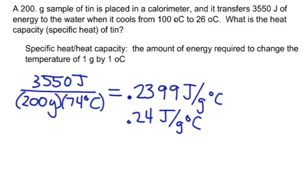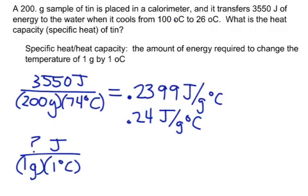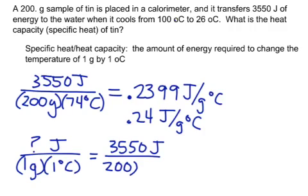If you really understand the proportions kind of thinking and you want this to be just like every other problem, well this time, we don't know the joules for every 1 gram and 1 degree Celsius, so it's like we don't know the other side of the problem, we don't know the specific heat. But we do know how much energy was used, 3,550 joules, and we do know that we had 200 grams instead of 1 gram, and we do know that we had a temperature change of 74 degrees Celsius.